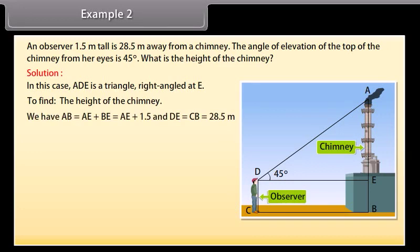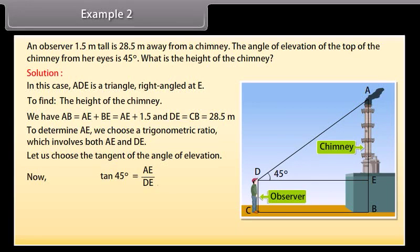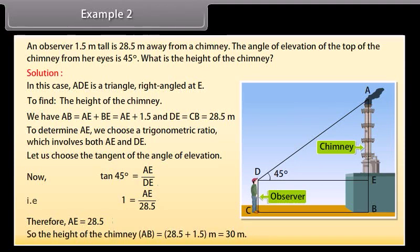We have AB equals AE plus BE equals AE plus 1.5, and DE equals CB equals 28.5 meters. To determine AE, we choose a trigonometric ratio which involves both AE and DE. Let us choose the tangent of the angle of elevation. Now, tan 45 degrees equals AE upon DE, that is, 1 equals AE upon 28.5. Therefore, AE equals 28.5. So, the height of the chimney AB equals 28.5 plus 1.5 meters, which equals 30 meters.